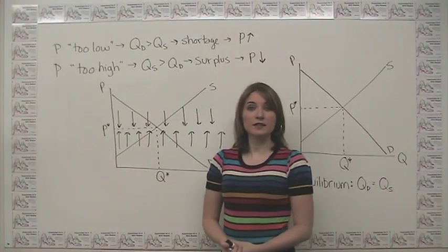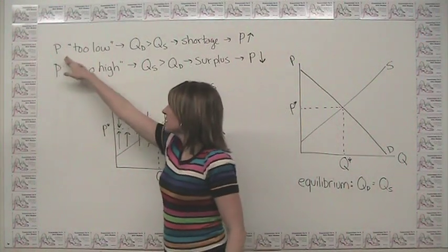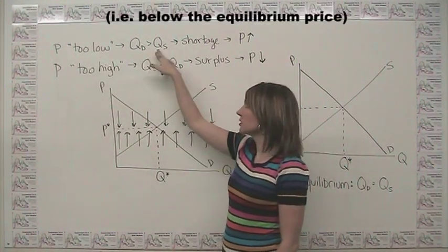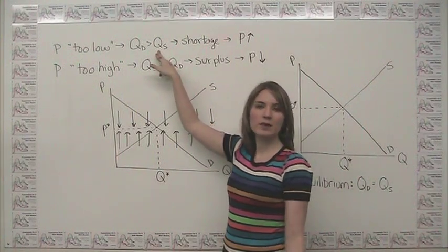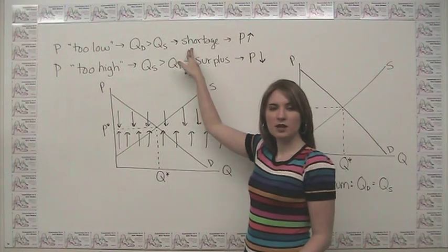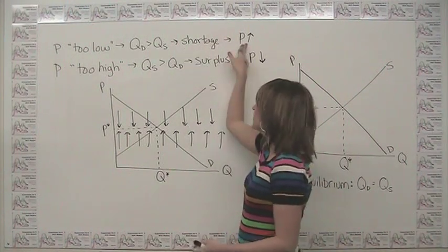So let's summarize what we just said. We said if we set the price too low, then we have a demand that's larger than our supply. We have people waiting in line. We have a shortage. This shortage causes upward pressure on prices.